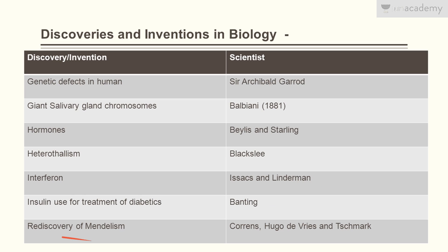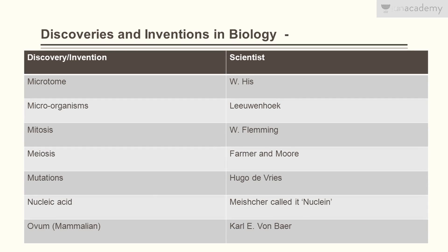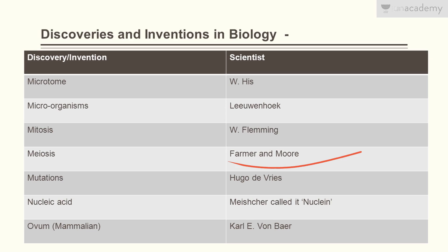Rediscovery of Mendelism was done by Correns, De Vries, and Tschermak. Microtome was discovered by W. His. Microorganisms were discovered by Leeuwenhoek. Mitosis was discovered by W. Fleming. Meiosis was discovered by Farmer and Moore.